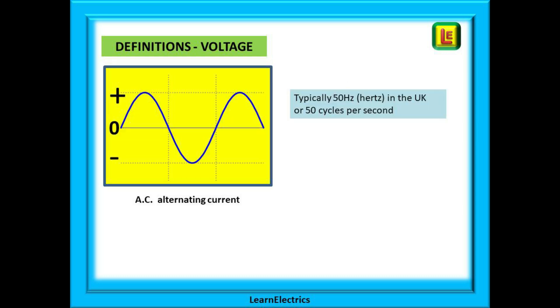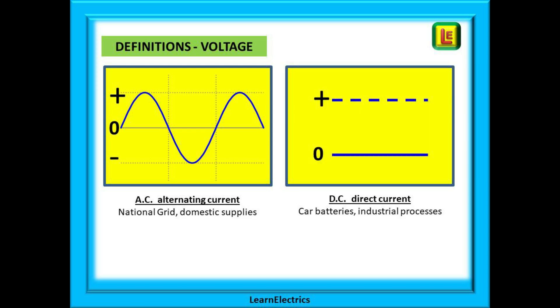A voltage can be what we call AC alternating current. The voltage is rising and falling up and down at a certain frequency. For most of the UK this will be 50 hertz or 50 cycles per second. And then we have DC voltages or direct current, the sort of voltage we get out of a car battery. Just a positive pole and a negative pole and nothing changes.